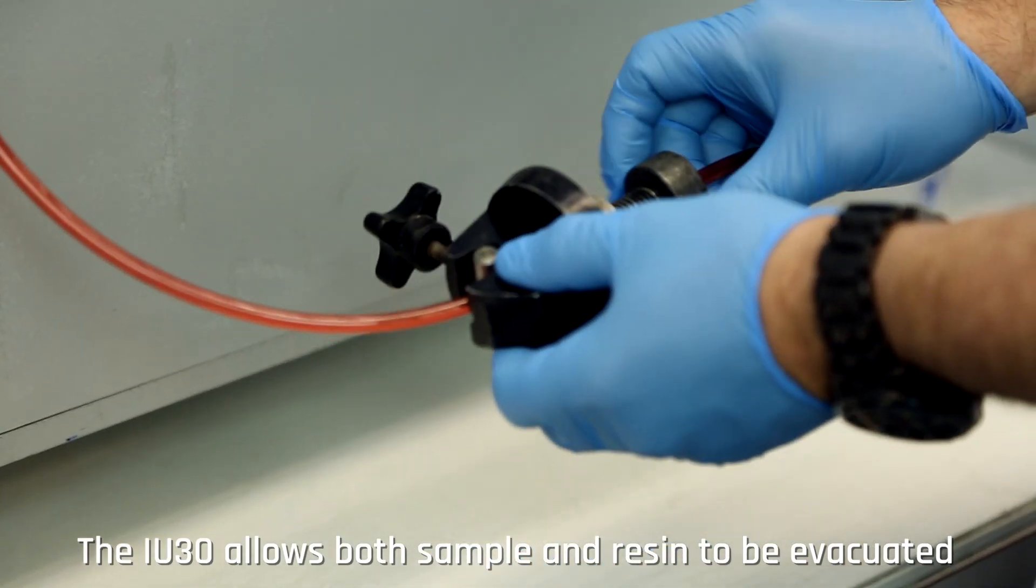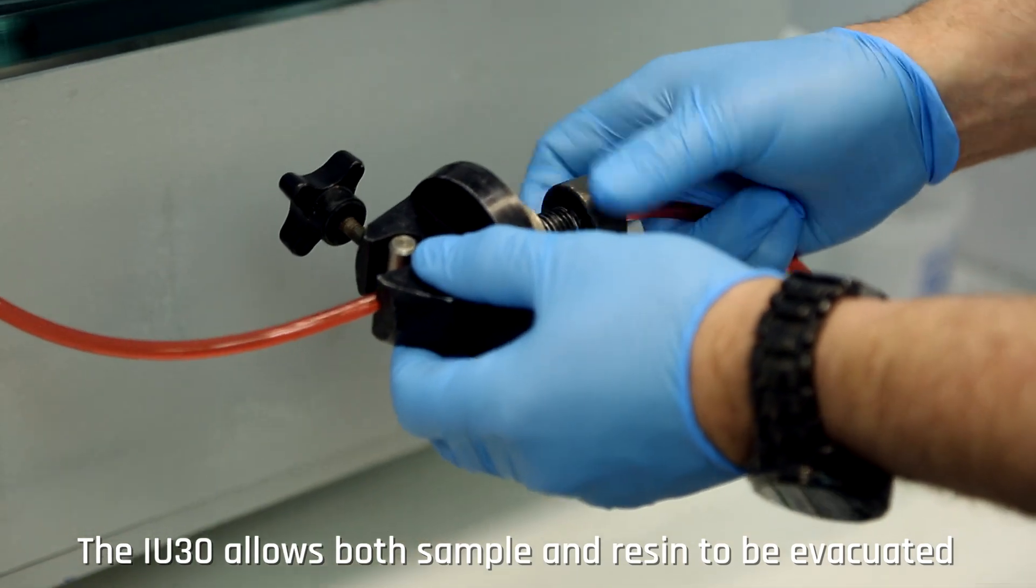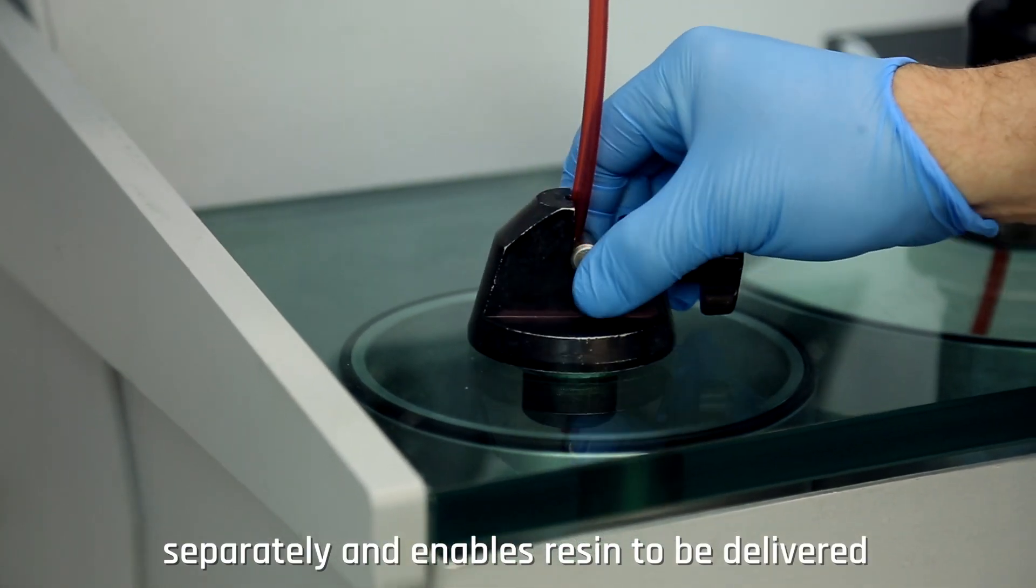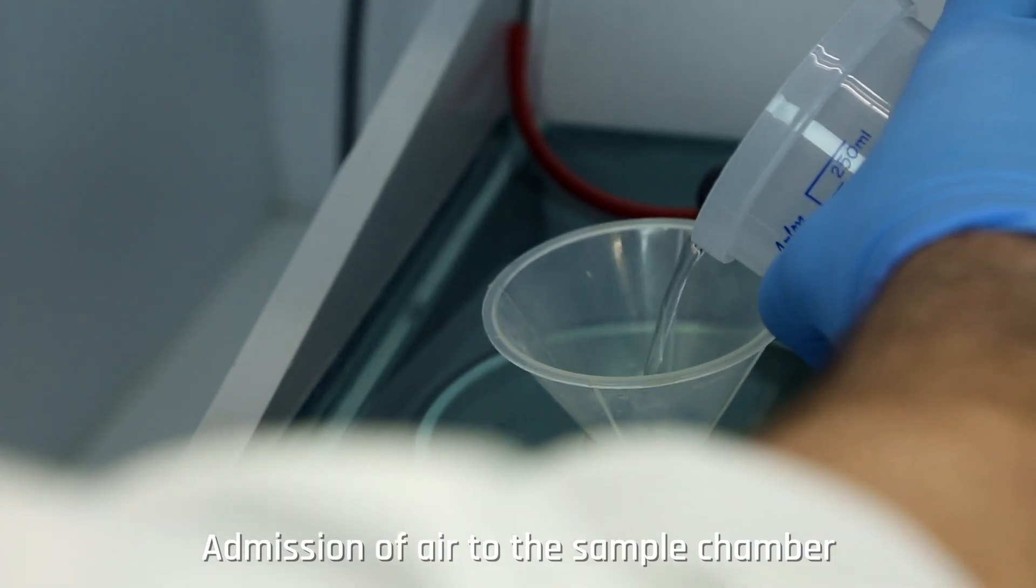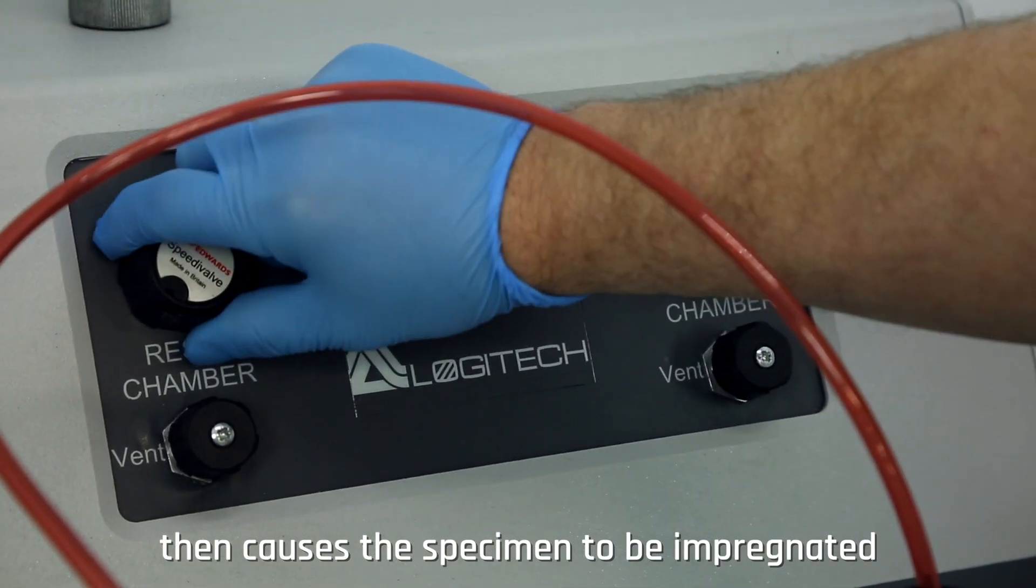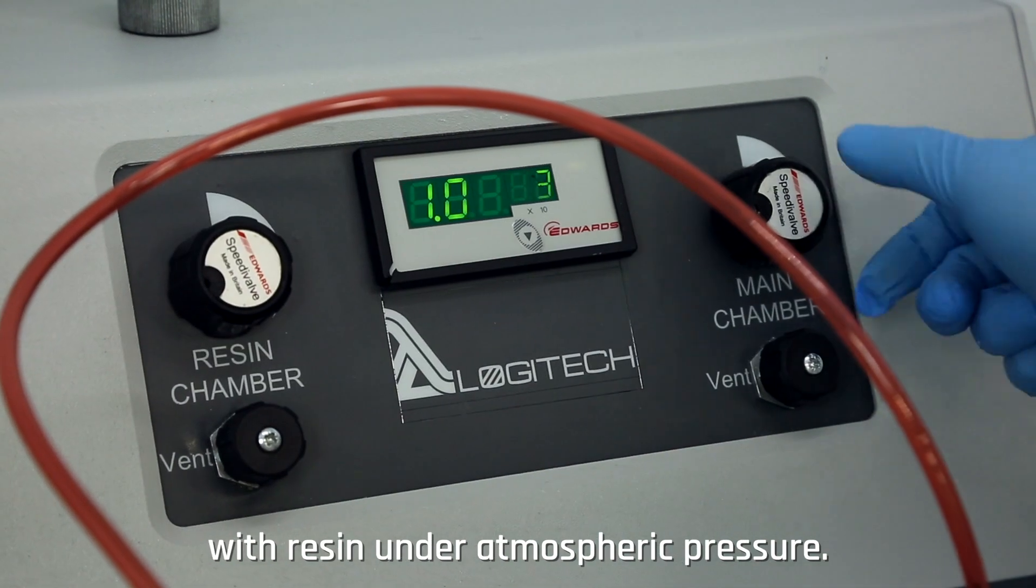The IU-30 allows both sample and resin to be evacuated separately and enables resin to be delivered to the sample while both remain under vacuum. Admission of air to the sample chamber then causes the specimen to be impregnated with resin under atmospheric pressure.